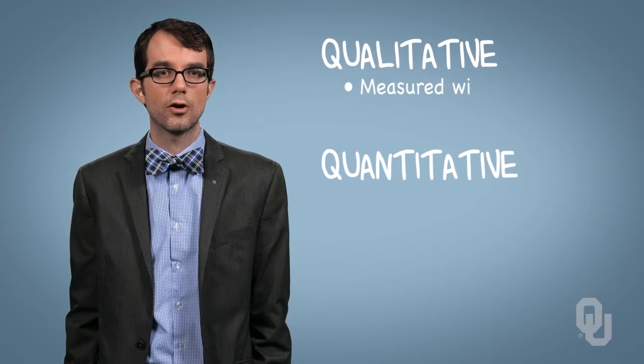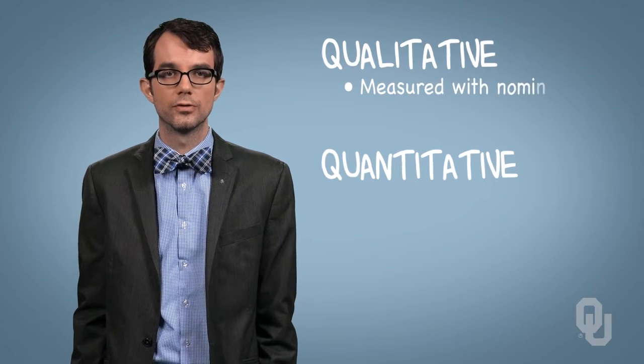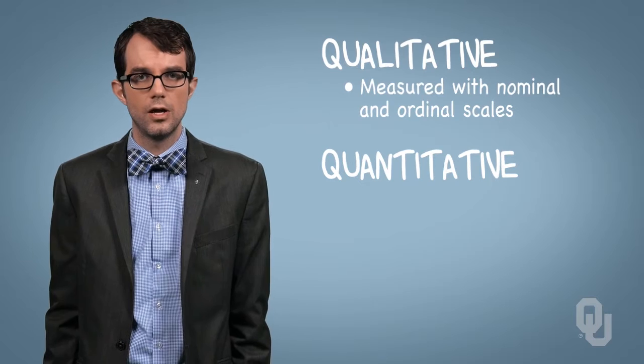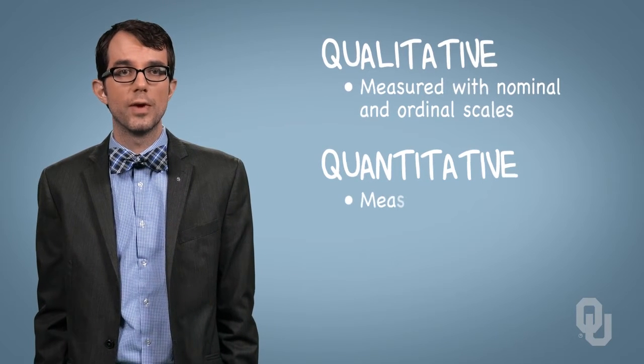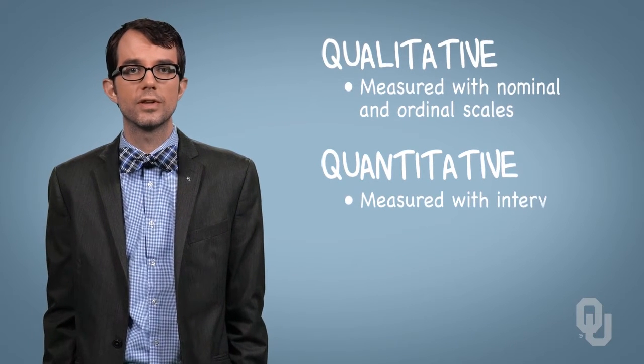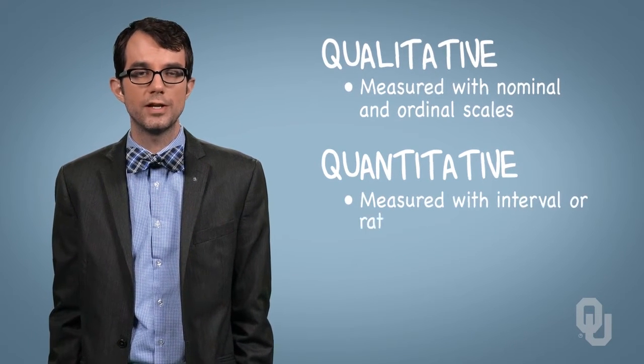Broadly speaking, variables fall into two categories: qualitative and quantitative. Qualitative data tend to describe characteristics that aren't measured with numbers and are measured with nominal or ordinal scales. Quantitative variables are those measured with numbers and are measured with an interval or ratio scale.